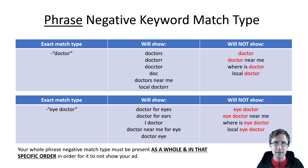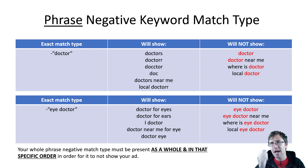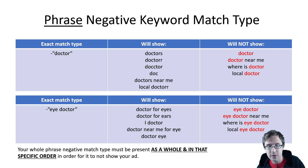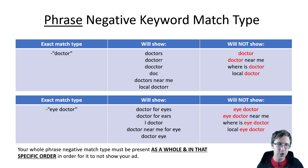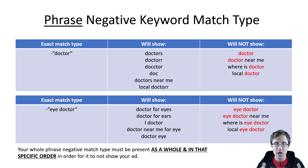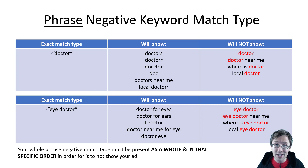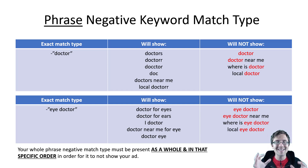Let's take a look at another example: 'eye doctor'. In this case, both words have to be together anywhere in the search query and in that order. So your ad will not show for anyone typing 'eye doctor', 'eye doctor near me', 'near me eye doctor', 'where is eye doctor', or 'local eye doctor' — the words highlighted in red are together. However, it will still show for queries where these two words are not together, like 'doctor for ears', 'doctor for eyes', or 'doctor near me for eye'. So the phrase must be present as a whole and in that exact order.